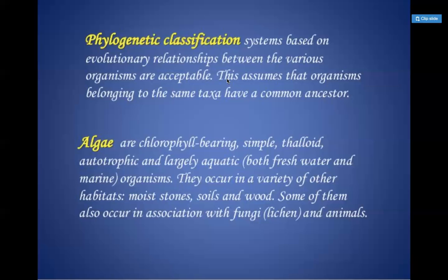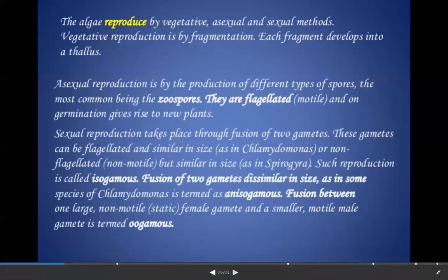Algae can reproduce by three basic ways: vegetative propagation, asexual reproduction, and sexual reproduction. Vegetatively, they reproduce just by fragmentation. Fragmentation is when a small part gets separated from the main plant body and later forms a complete individual or complete plant structure.